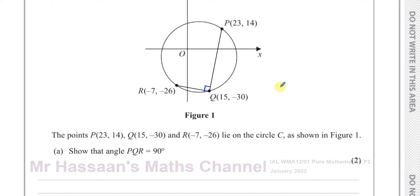There are different ways we could do this, some longer than others. One way would be to find the length of PQ, QR, and PR — and if that's a right angle, then PR would be the hypotenuse of a right-angle triangle, and Pythagoras' theorem would apply. So if PR squared equals QR squared plus PQ squared, then it would be a right-angle triangle, and therefore angle PQR would be a right angle.